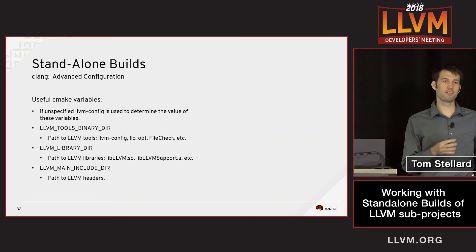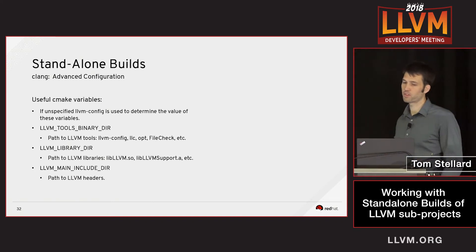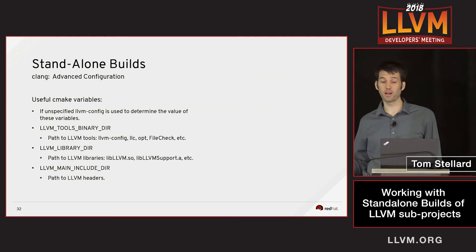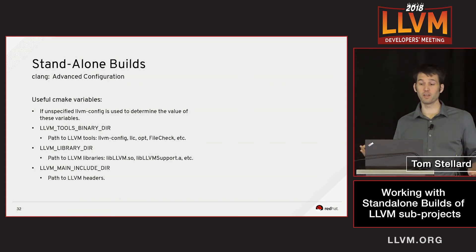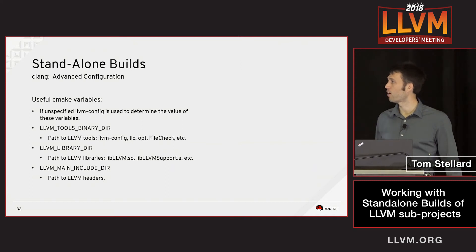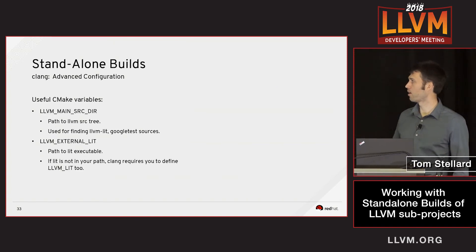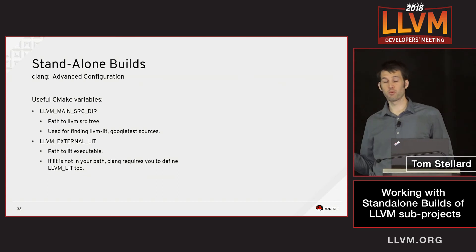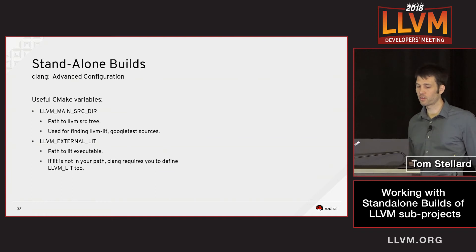We don't have a lot of time to go into all the advanced configurations, but briefly: all those CMake variables I mentioned that usually get populated by llvm-config output can actually be overridden. One reason you might want to do this is if you wanted to get the Google test unit tests working — you could install the LLVM source somewhere on your system and override the default with one of these variables. Also, the external lit variable is available not only for Clang but for every subproject, so any subproject can be configured to use an external lit the same way.